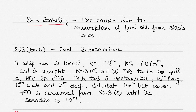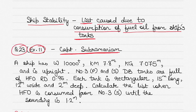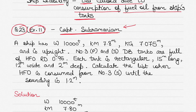Hi everyone. In today's question on ship stability, I will teach you how to find the list caused due to the consumption of fuel oil from one of the ship's tanks. If we consume fuel from one side of the ship's tank, there will be a list because the weight will reduce from one side of the vessel. This question is from Captain Subramaniam's Ship Stability book, the Nutshell Series Volume 1, Exercise 11, Question 23.